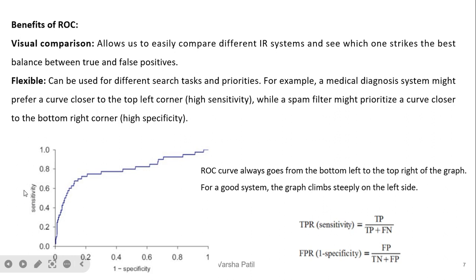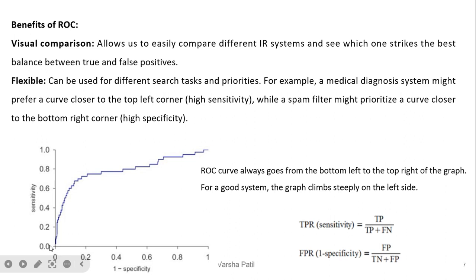In the ROC curve, the y-axis is sensitivity (TPR) and the x-axis is 1 minus specificity (FPR). The formula for sensitivity is TP divided by TP plus FN, and FPR is 1 minus specificity. The diagonal line indicates 50% success of the system. A curve that covers maximum area and is close to 1 indicates a more successful system. If parameters are tuned for maximum sensitivity the curve rises high, and if tuned for more specificity the curve shifts accordingly — it depends on the application's nature.